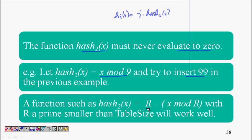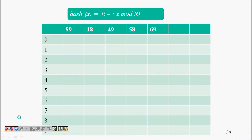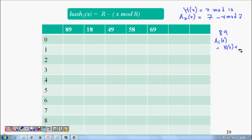A function such as hash2(x) = R - (x mod R), with R a prime smaller than table size, works well. We have h(x) = x mod 10, and h2(x) = 7 - (x mod 7). We try to insert now these items. We know h_i(x) is h(x) + f(i) mod table size, and f(0) is 0 for this closed hashing strategy.